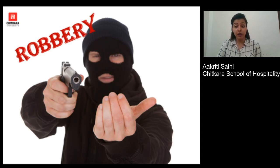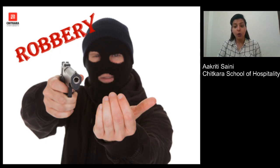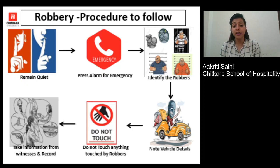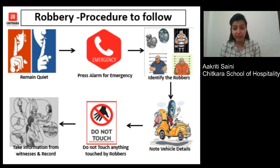Robbery can involve someone who has come prepared with a mask and arms and ammunition, and will try to harm guests as well as staff. It is very important to use your presence of mind during such activity. If there is a robber, remain quiet — do not shout. There is always an emergency alarm around the front desk which must be pressed to alert the local police station. By looking at the robbers, try to identify their height, age, voice, and build.